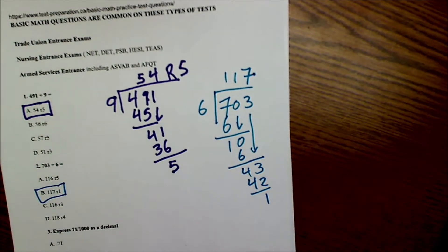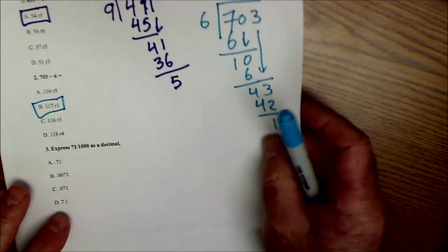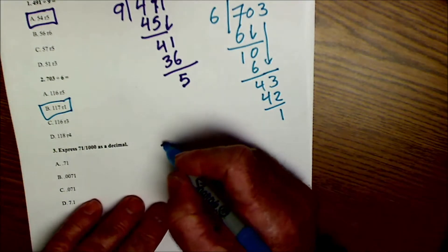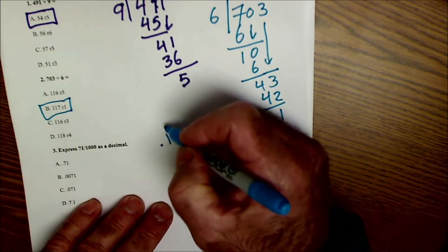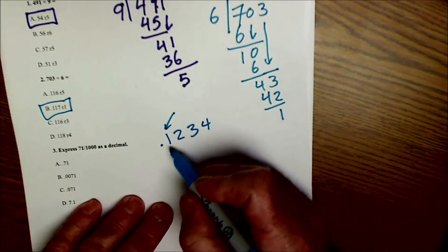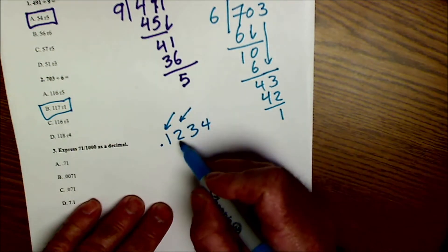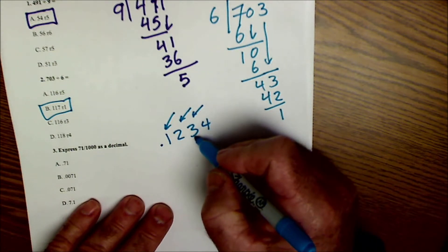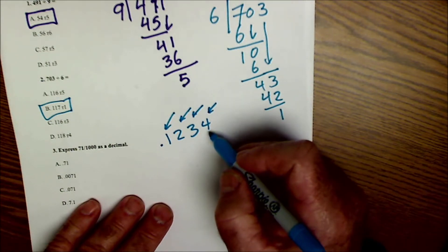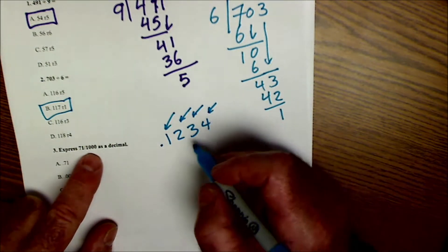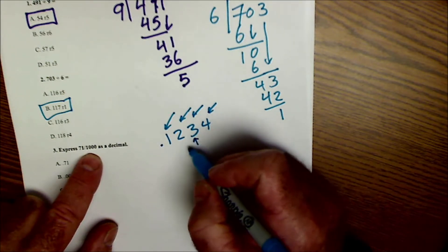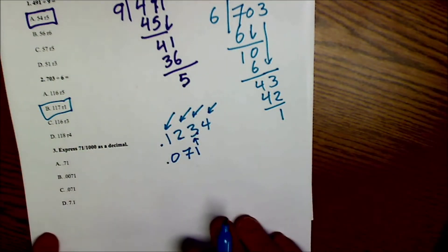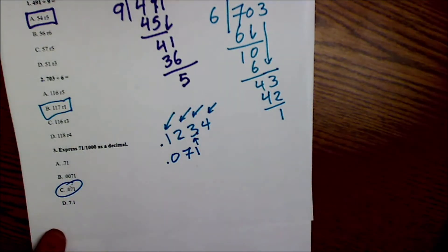Number 3, express 71 one thousandths as a decimal. So if I had a decimal point 1, 2, 3, 4: this is my tens place, this is one tenth, this is my hundreds place so that would be 2 one hundredths, this is my thousands place 3 one thousandths, and this is 4 ten thousandths. So I have 71 one thousandths, that would be up to this place right here and it would be 71 in this place, so it would be .071. I look over here and it's answer C.